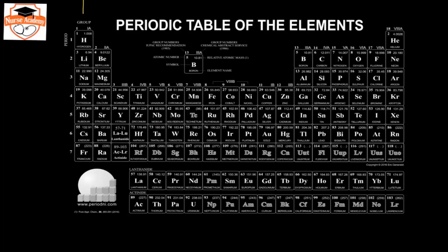Elements in group 1 have one valence electron, group 2 have two, group 13 have three, group 14 have four, group 15 have five, group 16 have six, group 17 have seven, and group 18 have eight valence electrons. Atoms tend to react to form the lowest energy state, which is the same as having a full valence shell. To do this, atoms form ions by either adding or subtracting electrons based on how many valence electrons they have.